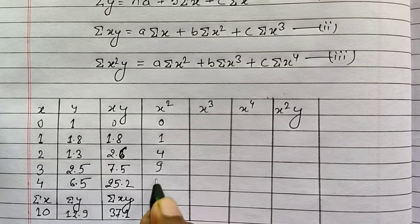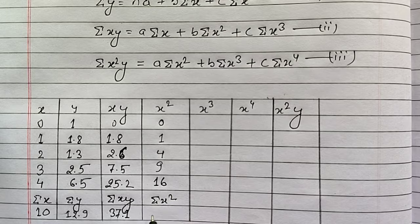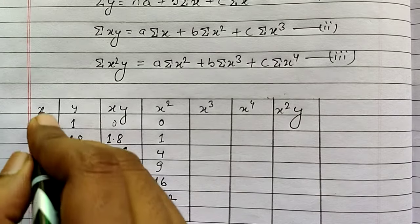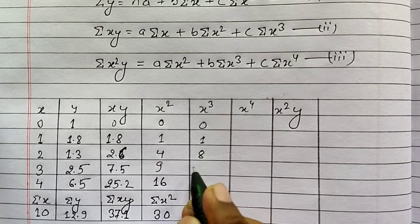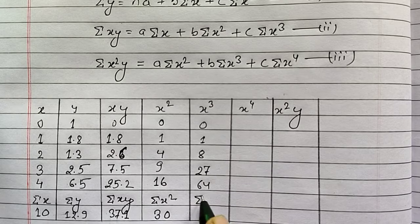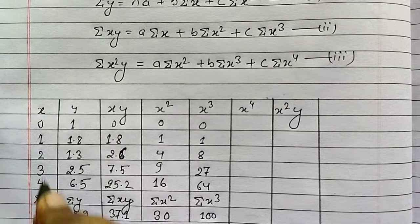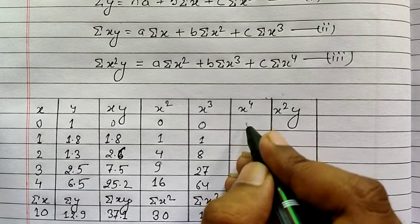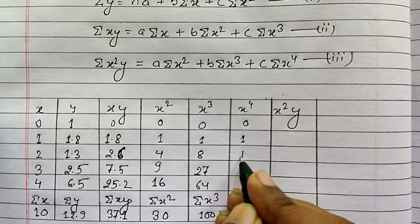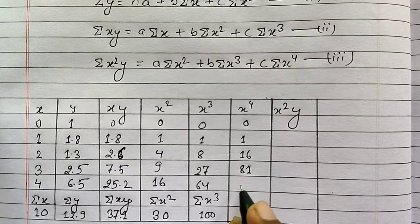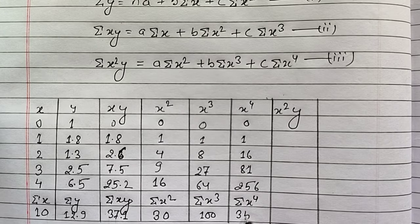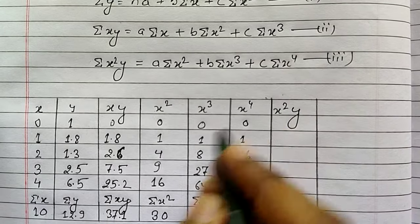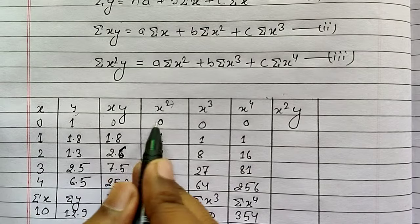For x cubed: cubing each term gives 0, 1, 8, 27, 64, so summation x cubed equals 100. For x to the power 4: the fourth powers are 0, 1, 16, 81, 256, so summation x to the power 4 equals 354. For x squared y, we multiply x squared by y for each term.